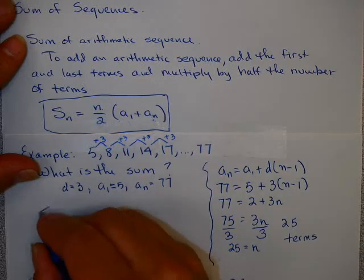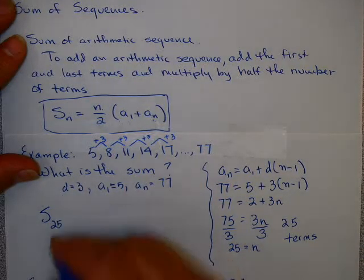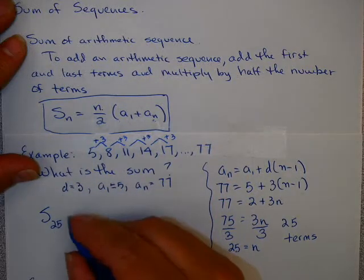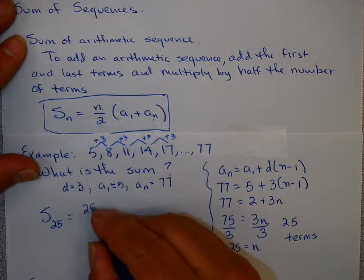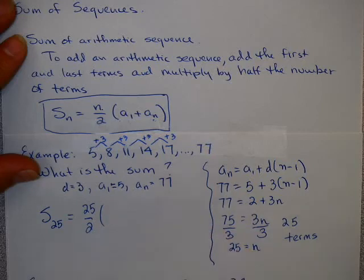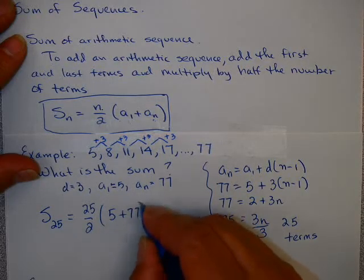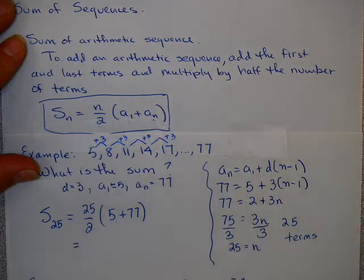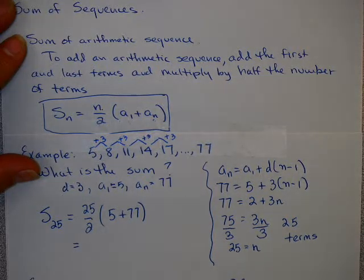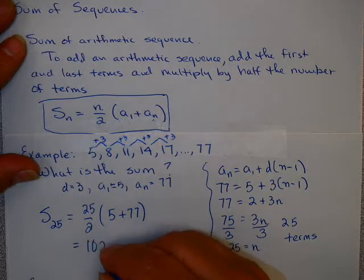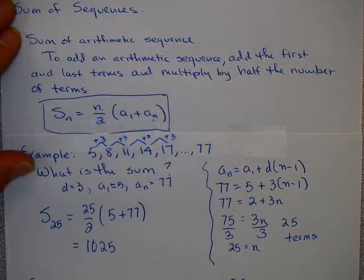So I'm looking for the sum of the first 25 terms. I'm going to take 25 divided by 2 times the first term, which is 5, and the last term, which is 77. If you do this calculation, you will get 25 divided by 2 times 82, which gives you 1,025. And that is the sum of that arithmetic sequence.